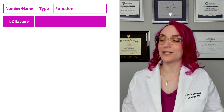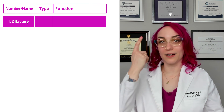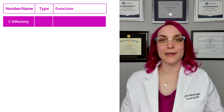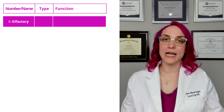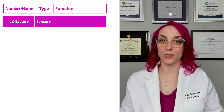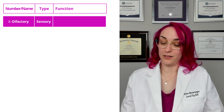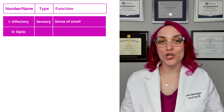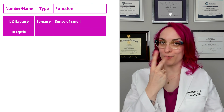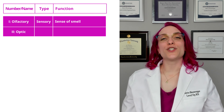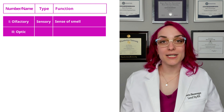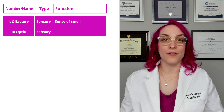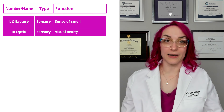Cranial nerve 1 is olfactory — I always think of it as you've got one nose. Olfactory is a sensory-only nerve, and its function is sense of smell. Cranial nerve 2 — you've got two eyes — is your optic nerve. This one is also just sensory, and the function is your sense of vision, your visual acuity.